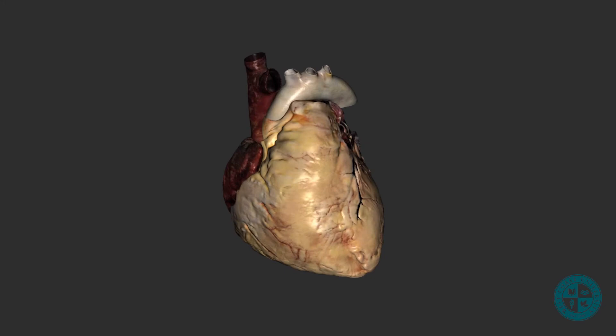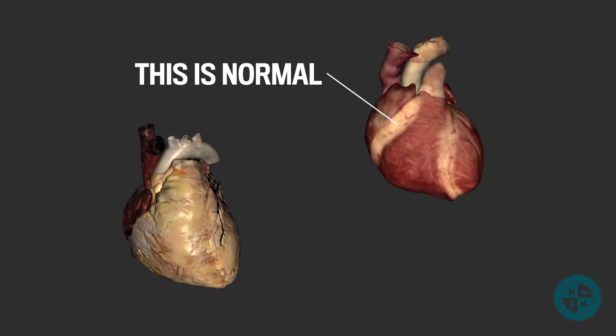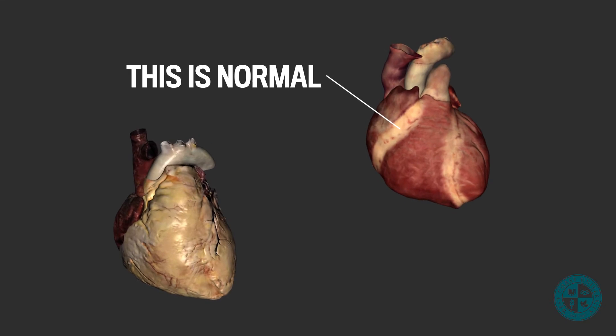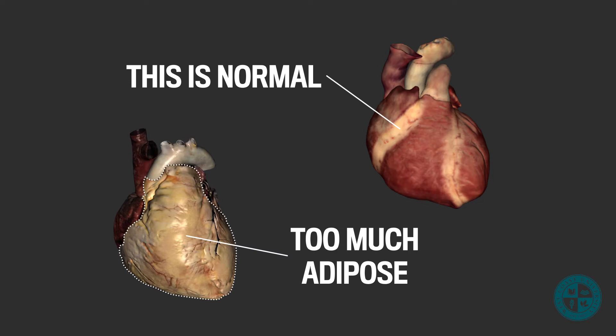When a surgeon opens a patient's chest and removes the pericardium, they will begin to see the external features of the heart. This external anatomy gives them insight on where they would need to cut and what vessels and structures they would need to avoid. You'll notice that on the epicardial surface of the heart, there is quite a bit of adipose tissue. Some adipose here is very normal. These fat deposits are typically a local energy source for the heart. When there's too much or too little, that can often be reflective of poor health in the patient.